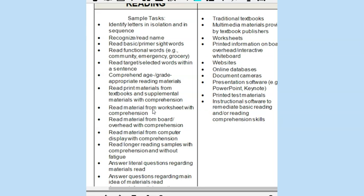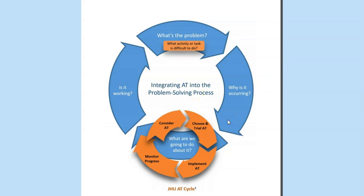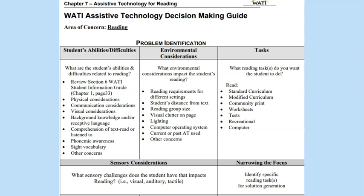As we look at the DODEA Assistive Technology Consideration Guide, we can identify some sample tasks the student might be struggling with. I encourage teams to consider using this section from the Wisconsin Assistive Technology Assessment manual, which frames different consideration questions when looking at the student's abilities and difficulties, environmental considerations, and sensory considerations, helping us discuss and hypothesize why the student is struggling so we can then identify what assistive technology we want.